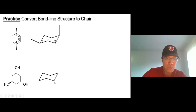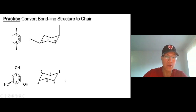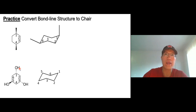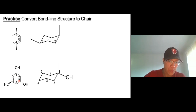One more time — numbering the carbon really helps. Carbons one, three, and five have substituents on them. You can put one anywhere; I'm going to put it right there. So: one, two, three, four, five, and six. At carbon one there's a hydroxyl group pointing down. On carbon one you have two options — pointing up or pointing down — this one is down, so keep it down.